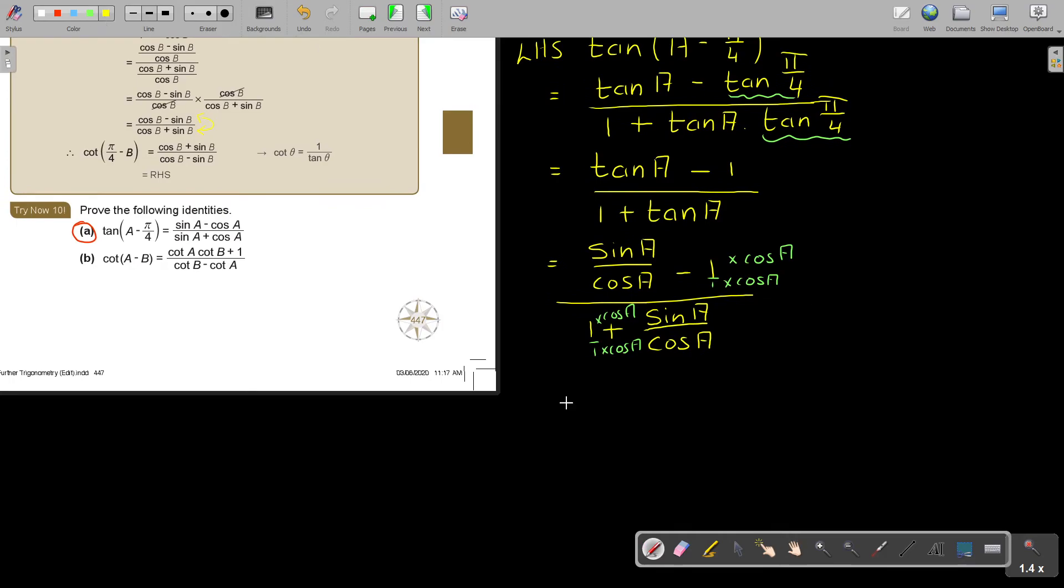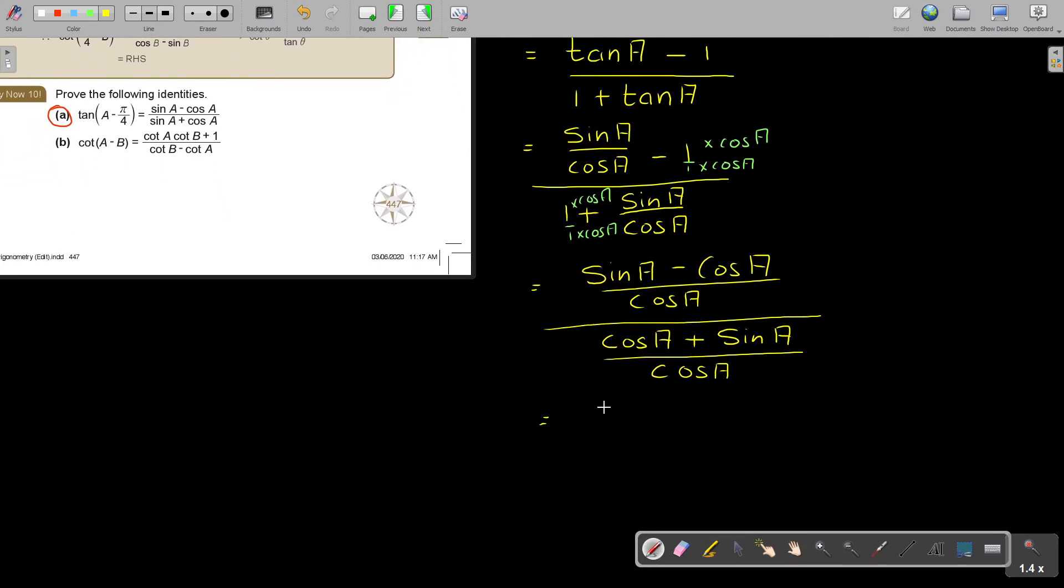And then I'm getting sin a minus cos a over cos a. And not necessarily, you can already go to multiply. But for now, for this video's sake, I'm going to do it like this. Cos a plus sin a over cos a. And then, I'm going to go into sin a minus cos a over cos a multiply cos a over cos a plus sin a.